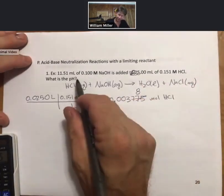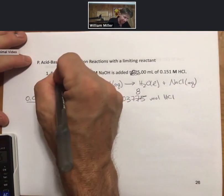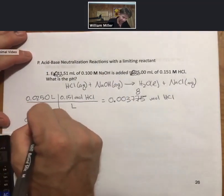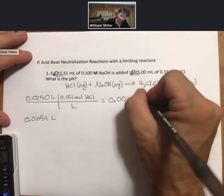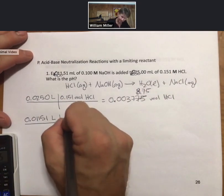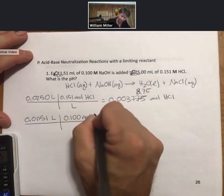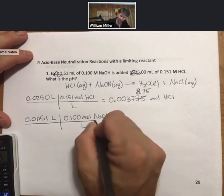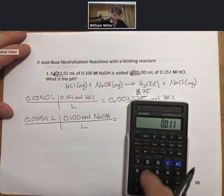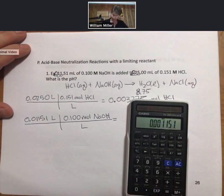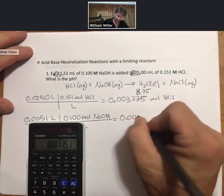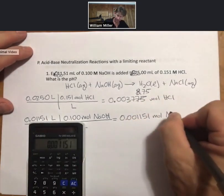Now let's do the same thing for the sodium hydroxide. Move the decimal place three places. This does have four sig figs so let's keep four sig figs just for this problem. If you kept three you'd be fine too. Now 0.100 moles of sodium hydroxide per liter. And this time I get 0.001151 moles of sodium hydroxide.